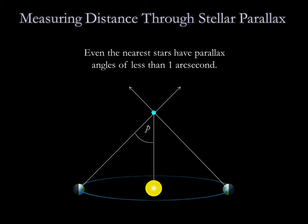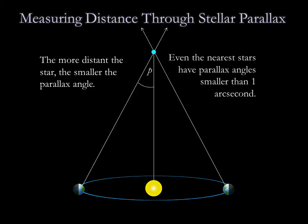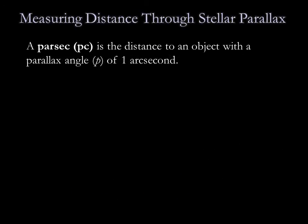The farther the star is from us, the smaller the parallax angle becomes. More distant stars have smaller parallax angles. Even the nearest stars to us have parallax angles smaller than one arc second, well below the angular resolution of the human eye. This is why ancient Greeks were never able to measure parallax. By definition, the distance to an object with a parallax angle of one arc second is one parsec.